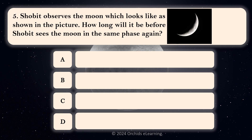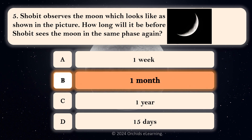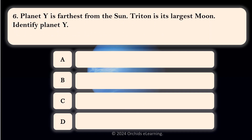Shobet observes the moon, which looks like as shown in the picture. How long will it be before Shobet sees the moon in the same phase again? B. One month.